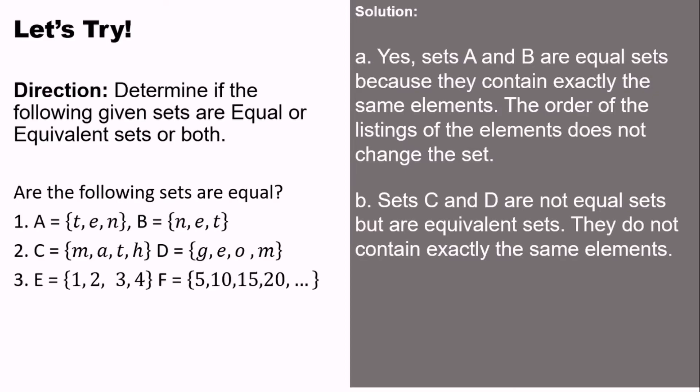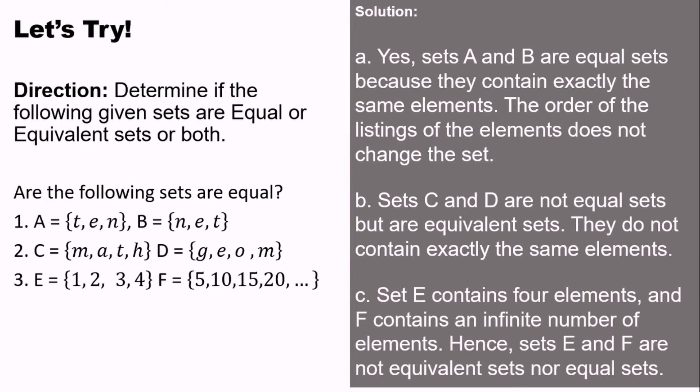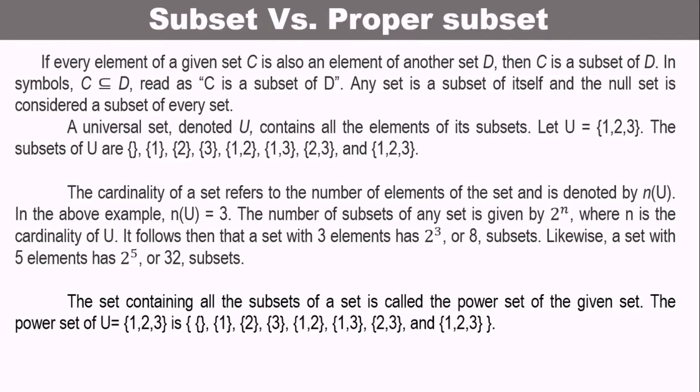Number 3: they are not equivalent set, and they're not equal set either. Because they have different elements, and one has ellipses, meaning it doesn't end. One is a finite set, and set E and set F is infinite set. So it cannot be equivalent set and at the same time equal set.